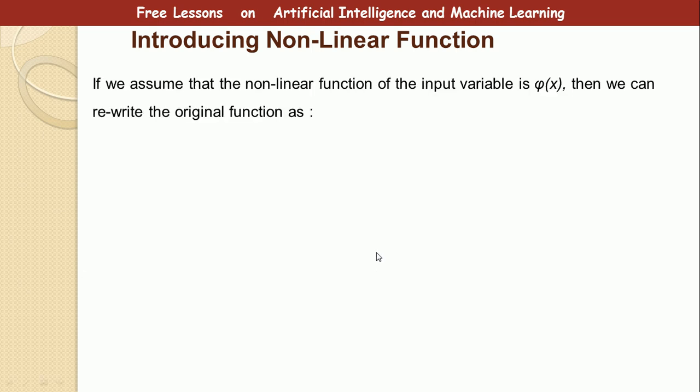If we assume that the non-linear function of the input variable x is given by phi of x, then we can rewrite the original function as this. Don't worry about the way this formula looks. It's actually very simple. So we are saying that instead of using x, just replace x with phi of x. It's as simple as that. Why did we choose to use phi of x? So that we can make the function a linear function of phi. But then phi would be a non-linear function of x. So either way, the formula we have would be non-linear in terms of x.